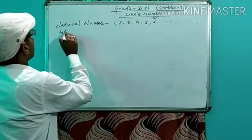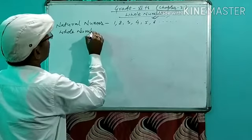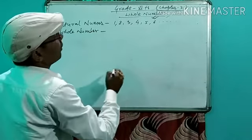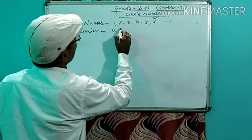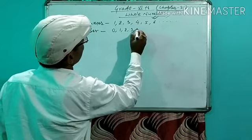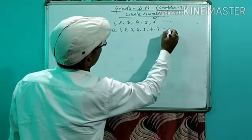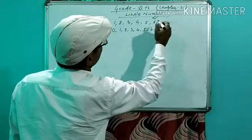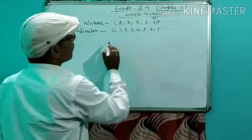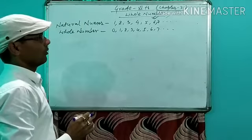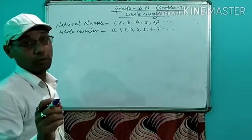Now, whole numbers start from 0, 1, 2, 3, 4, 5, 6, 7... and so on. Combination of 0 with natural numbers is known as whole numbers.